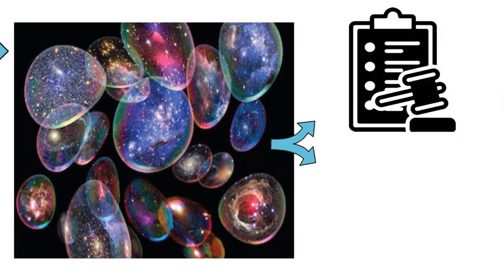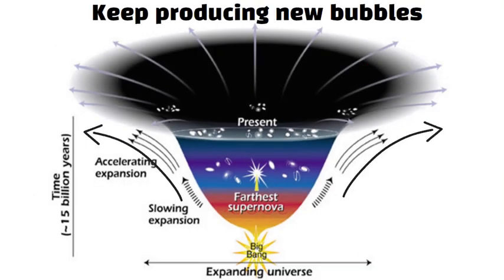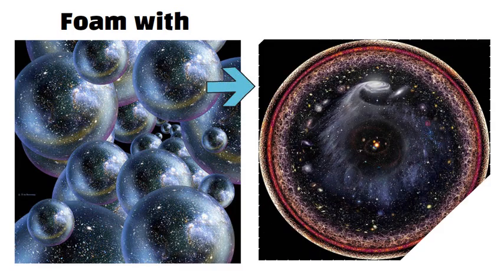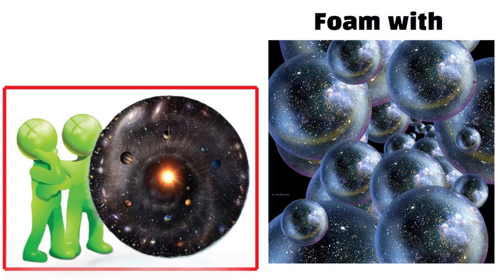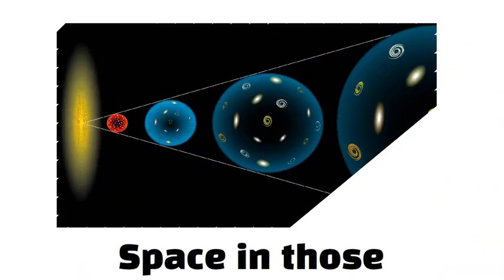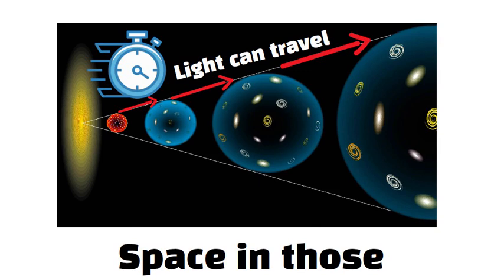Each bubble has its own laws and physical constants. Meanwhile, other regions still inflate and keep producing new bubbles. Imagine foam with countless bubbles. Each bubble is like an entire universe with unique properties. Our observable universe could be just one bubble among many, each too distant or disconnected for us to detect. Because space in those inflating regions expands so quickly, any neighboring bubbles race away faster than light can travel, making it effectively impossible for them to meet.